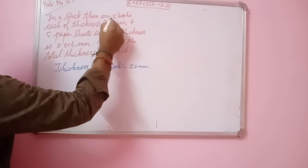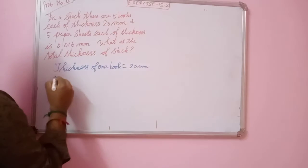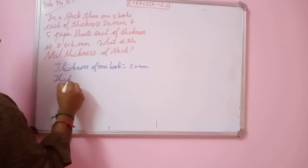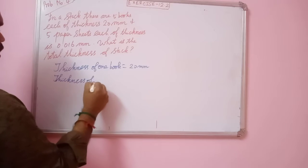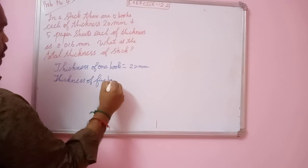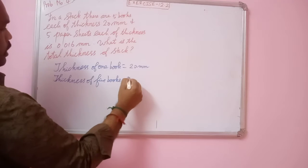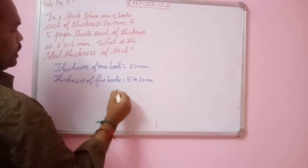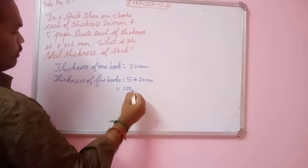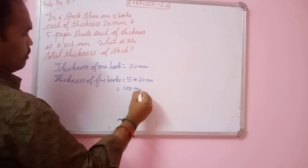Then, what we need to calculate next? Thickness of 5 books is how much? 5 into 20 mm. 5 into 20 is 100 mm.